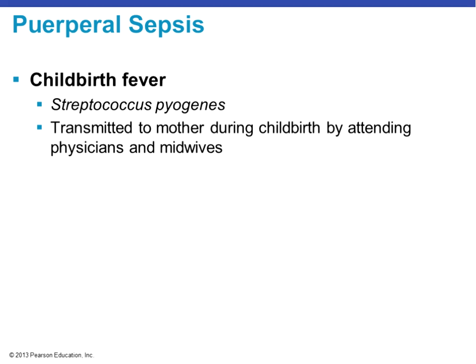Puerperal sepsis, or childbed fever, is caused by Streptococcus pyogenes. We don't see this as routinely as we did a hundred years ago, due to improved hygiene in hospital settings. The bacteria, which can be carried by healthy people, is transmitted to the mother during childbirth by attending physicians or midwives. Semmelweis really introduced and advocated handwashing to address this. It causes inflammation of the uterus, makes its way into the bloodstream, produces a very high fever, and the patient may die without intervention or antibiotic treatment.